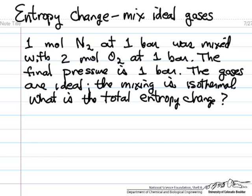In this problem we will calculate the entropy change at constant temperature when two gases are mixed at constant pressure. We have one mole of nitrogen and two moles of oxygen, assuming they're ideal gases. The solution could be done a couple ways.